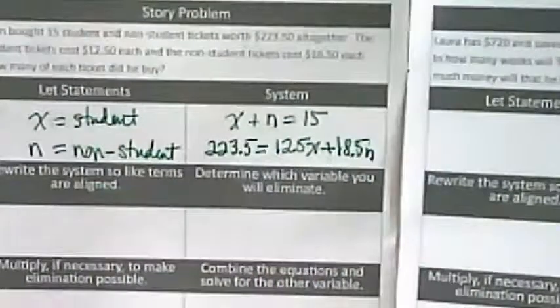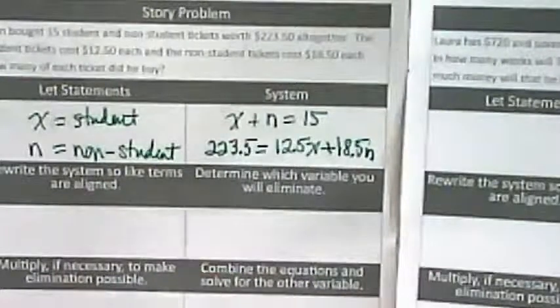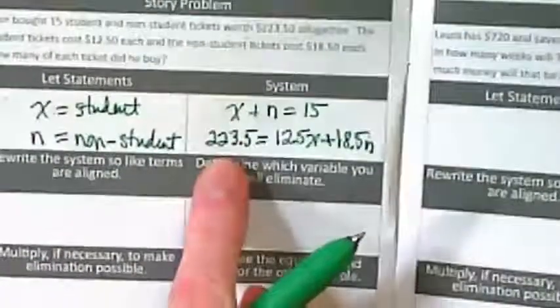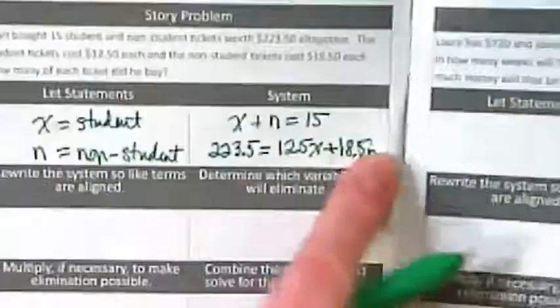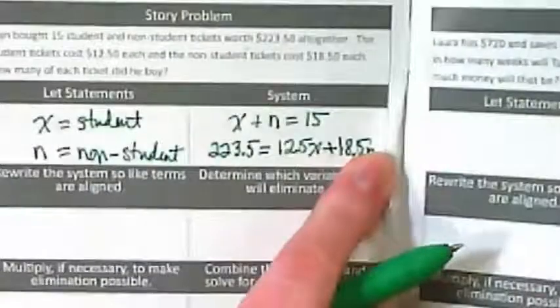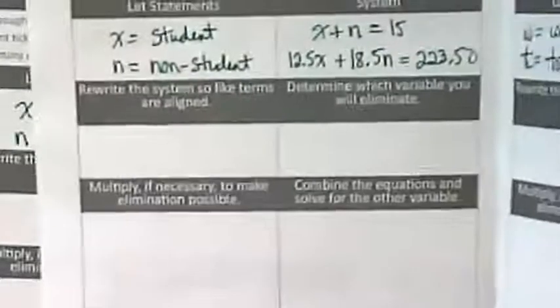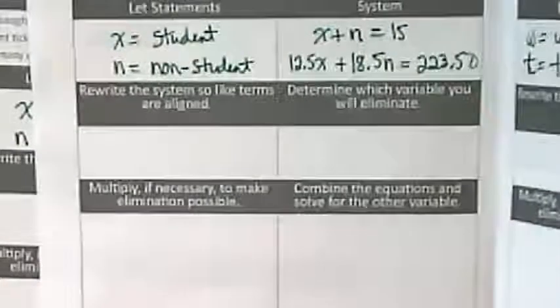How many of you were right on this or were really close? Does it matter that I put the $223.50 first? Could you have put it at the other end? As a matter of fact, I did when I wrote it in third period. Look, I reversed it. It still works.